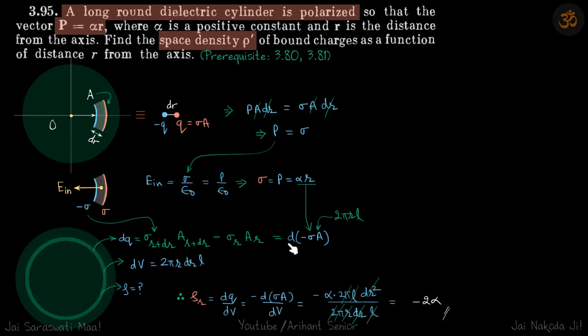This can be written as d(-σA). We put the minus sign because σ represents the inside surface charge. So A = 2πrl for this shell, the lateral surface area, and dV = 2πr·dr·l. Now we divide these to get ρ(r) = dq/dV = d(-σA)/dV.